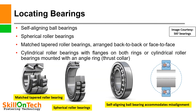Some more locating bearing types include: self-aligning ball bearings, spherical roller bearings, matched tapered roller bearings arranged back to back or face to face, and cylindrical roller bearings with flanges on both rings, or cylindrical roller bearings mounted with an angle ring or thrust collar. In the pictures you can see a matched tapered roller bearing, a spherical roller bearing where the rollers are in spherical shape, a tapered roller bearing where cylindrical rollers are arranged at an angle, and a self-aligning ball bearing which accommodates misalignments.